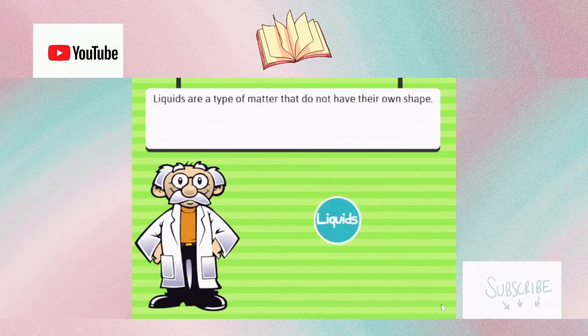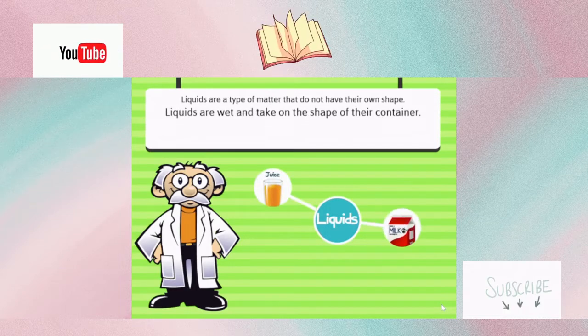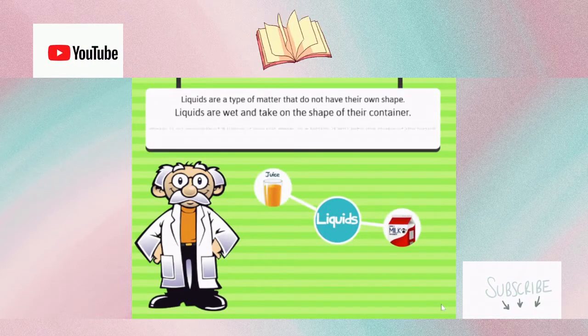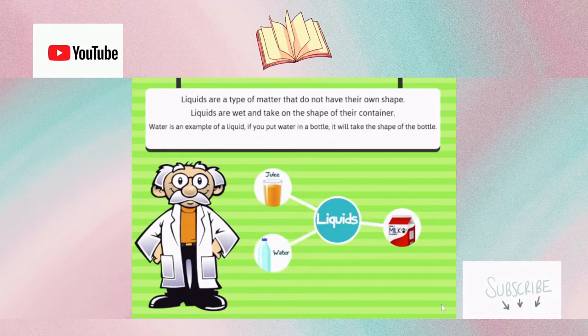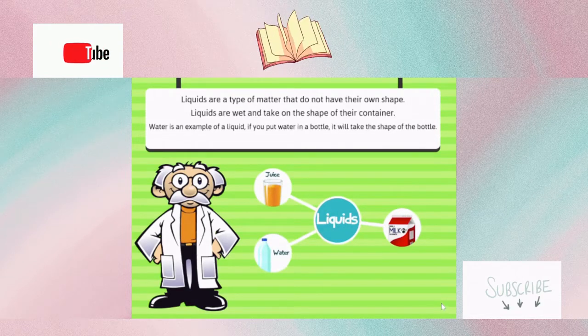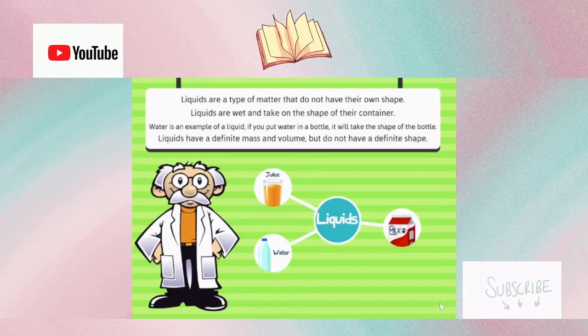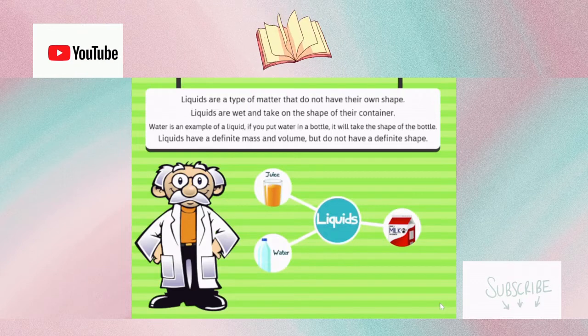Liquids are a type of matter that do not have their own shape. Liquids are wet and take on the shape of their container. Water is an example of a liquid. If you put water in a bottle, it will take the shape of the bottle. Liquids have a definite mass and volume, but do not have a definite shape.